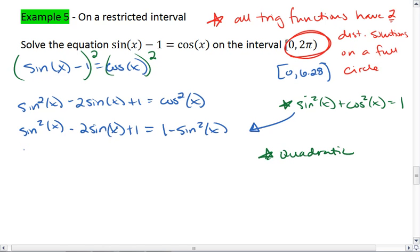I get 2sin²(x) - 2sin(x). Actually, this is really pretty. Equals 0. I can factor out a sine. I can actually factor out 2sin. 2sin(x), that leaves behind sin(x) - 1 equals 0.